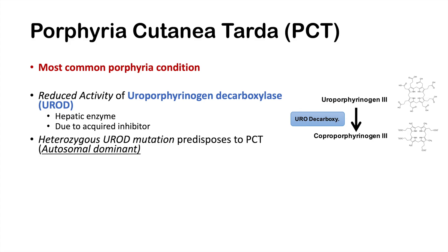Having a heterozygous uroporphyrinogen decarboxylase mutation predisposes to porphyria cutanea tarda, which is an autosomal dominant trait. So there are some genetic components to getting PCT. If you already have one allele with a mutation, you're more likely to get PCT, but you don't necessarily have to. An acquired inhibitor can lead to PCT without the mutation, but the mutation can predispose you to having it.